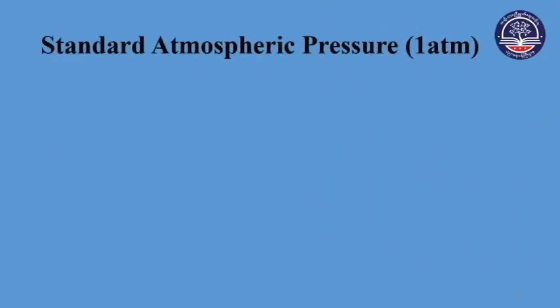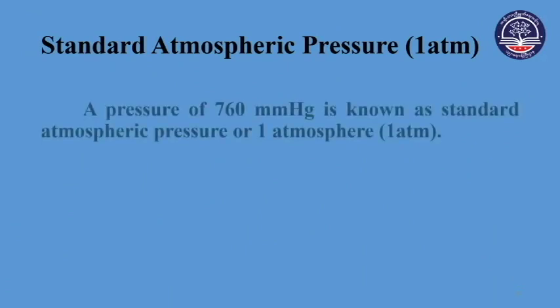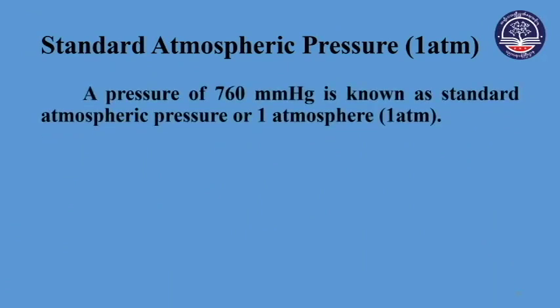If you are interested in this video, you will be able to find out more information. By definition, a pressure of 760 mm of mercury is known as standard atmospheric pressure, equal to 1 atm.